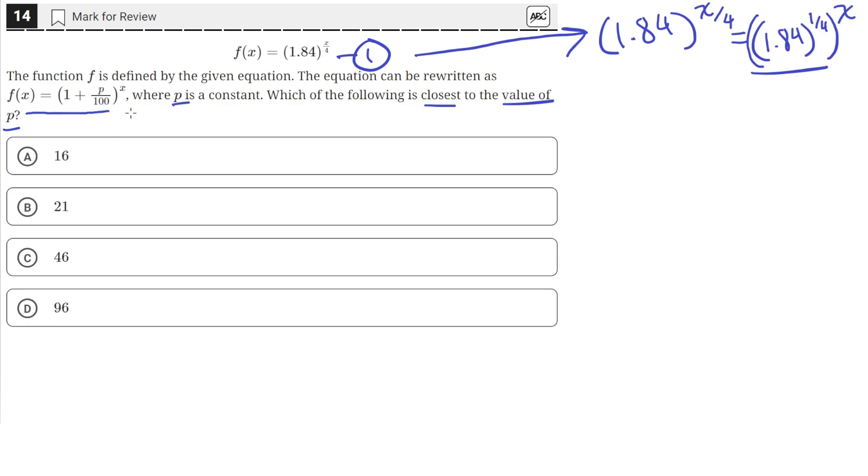But now we can see that since this quantity can be rewritten as this, and they have the same exponents, we can set the arguments inside equal to each other. So 1.84 raised to the 1 fourth raised to the x is equal to 1 plus p over 100 raised to the x.